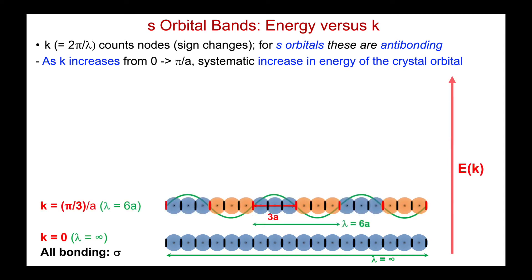And as we start to introduce nodes, here, for example, is one-third π over a, with a wavelength of 6a, 3 pluses, 3 minuses, 3 pluses, etc. Higher energy. Here's my anti-bonding nodes.